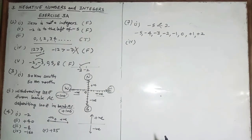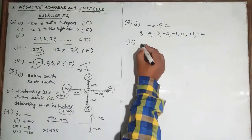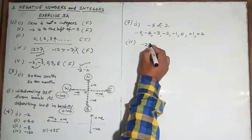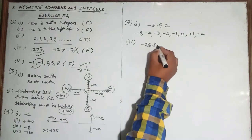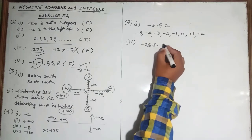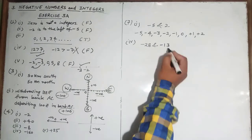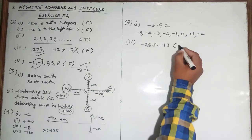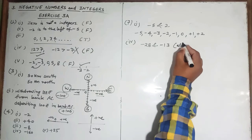Between minus five and two, the integers are: minus four, minus three, minus two, minus one, zero, plus one — up to but not including minus five and two themselves.